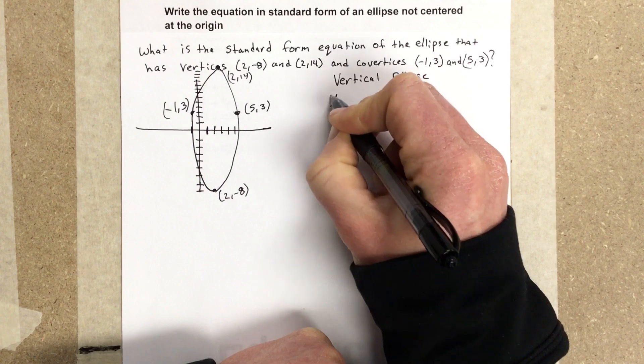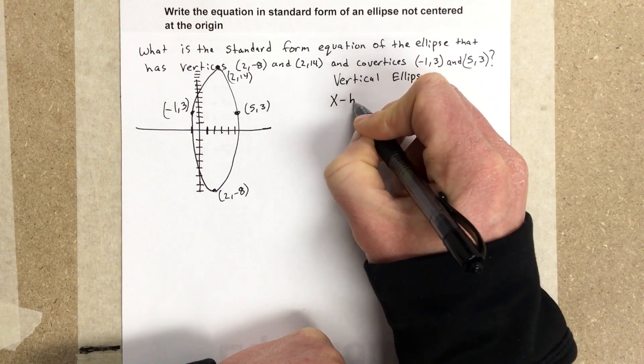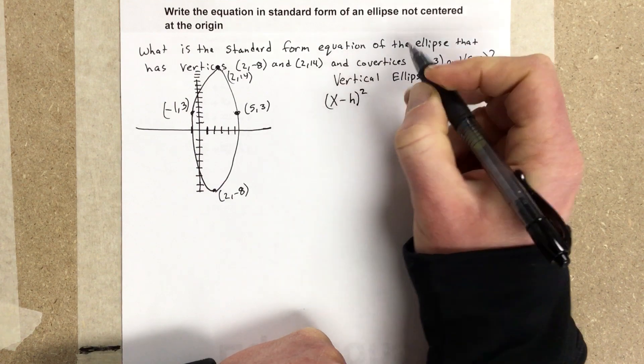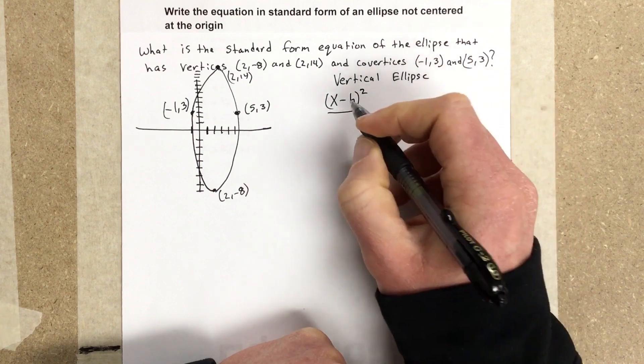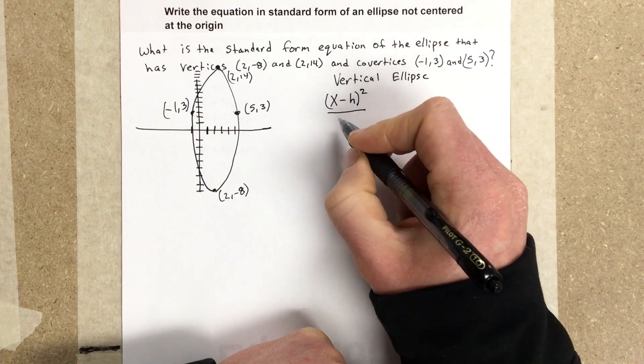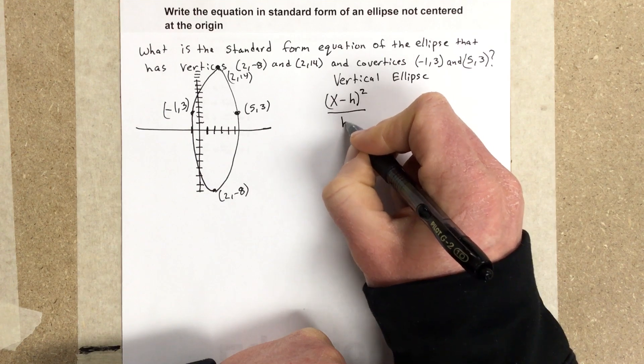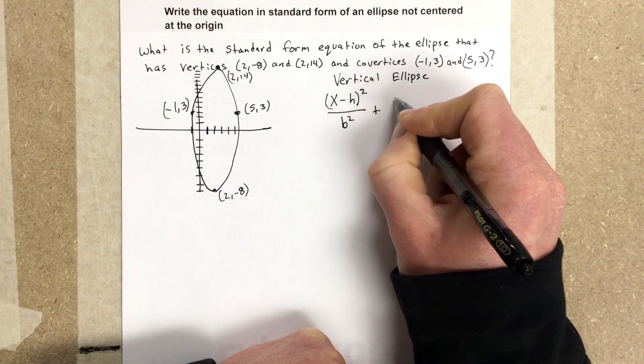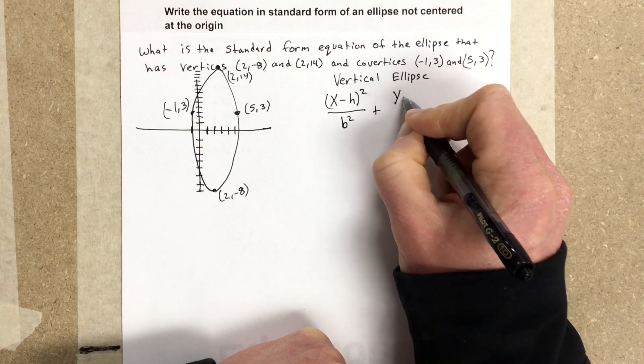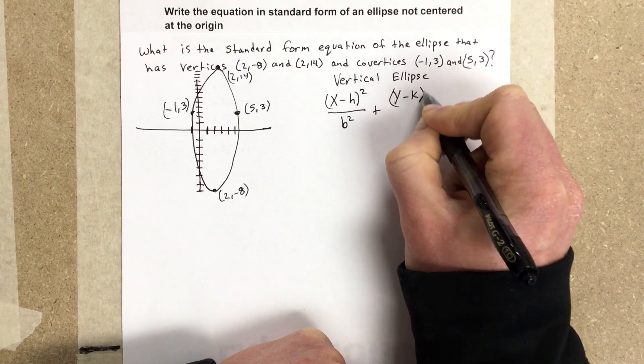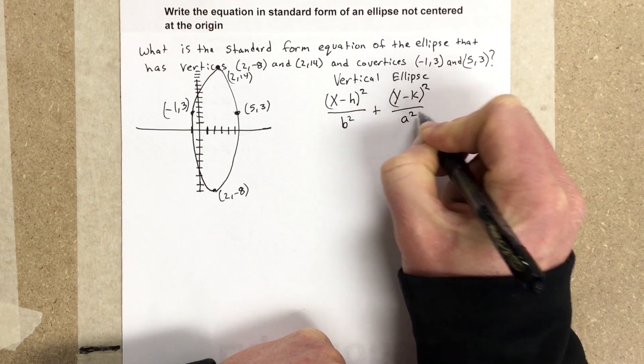Which tells us that our equation is going to be (x - h)² over b², plus (y - k)² over a² equals 1.